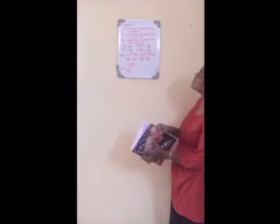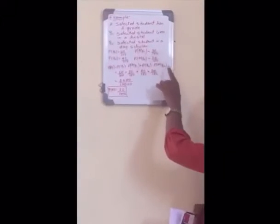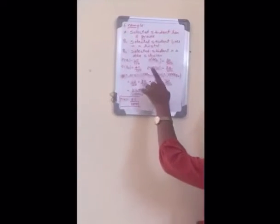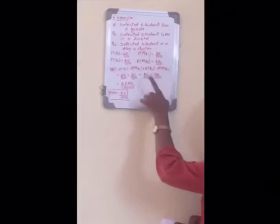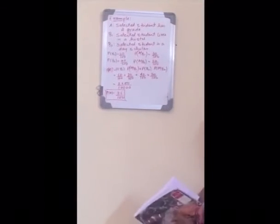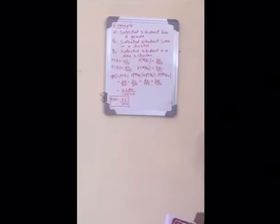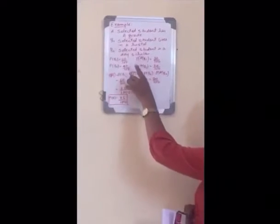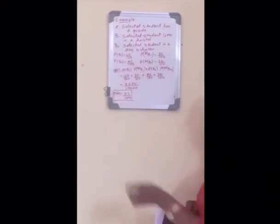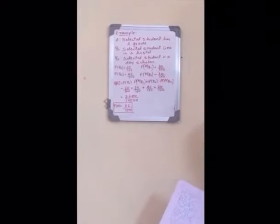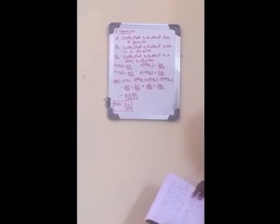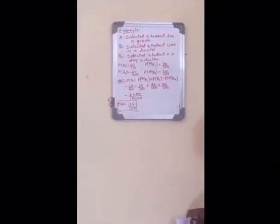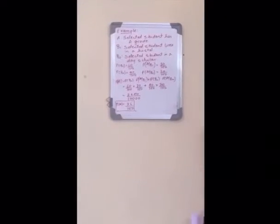The solution will be: Event A — selected student has A grade. Event B1 — selected student lives in a hostel. Event B2 — selected student is a day scholar. As given in the question, 60% reside in hostel and 40% are day scholars, so P(B1) = 60/100 and P(B2) = 40/100. Also, 30% of hostelers attain A grade and 20% of day scholars attain A grade, so P(A|B1) = 30/100 and P(A|B2) = 20/100.